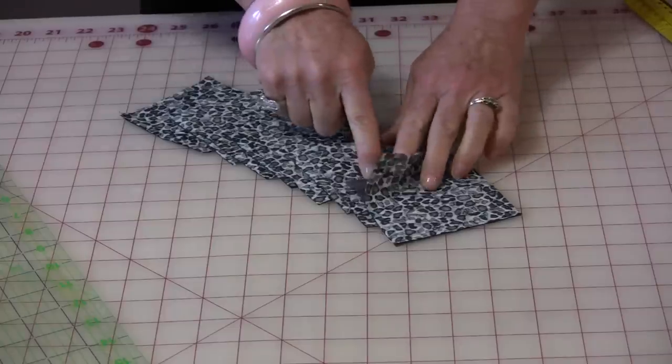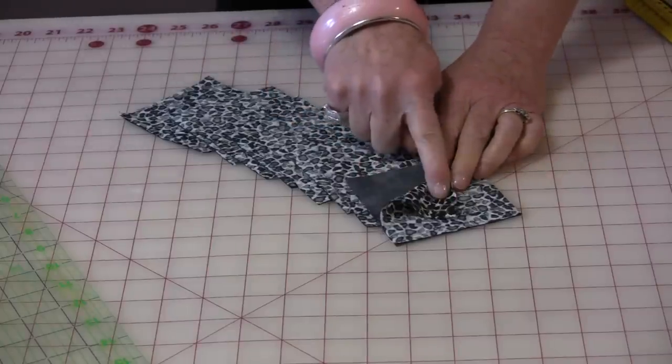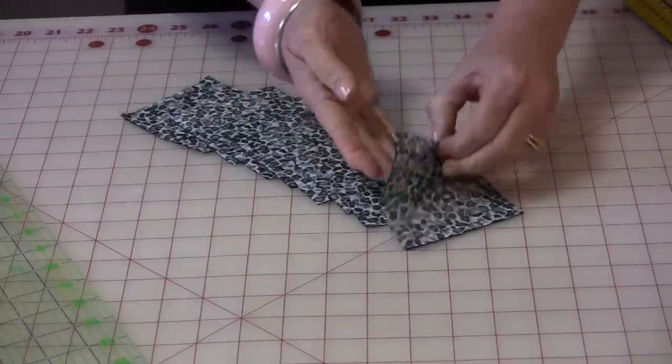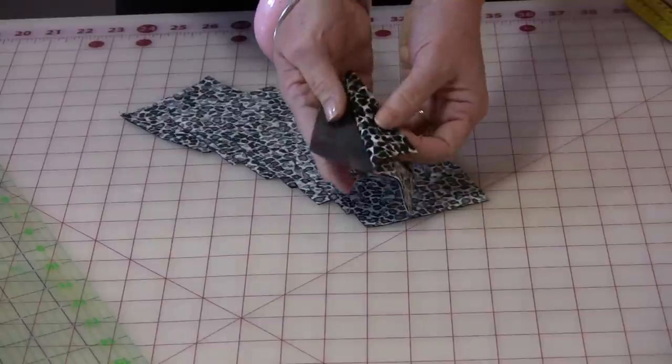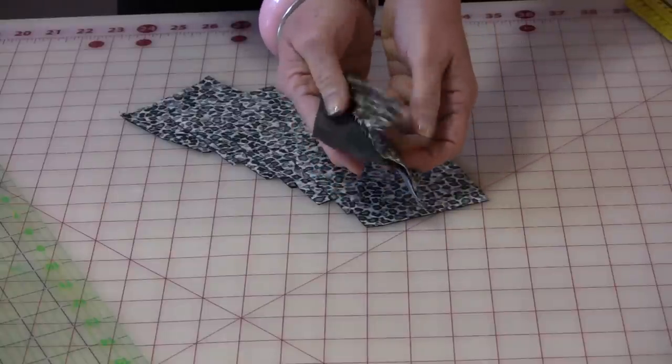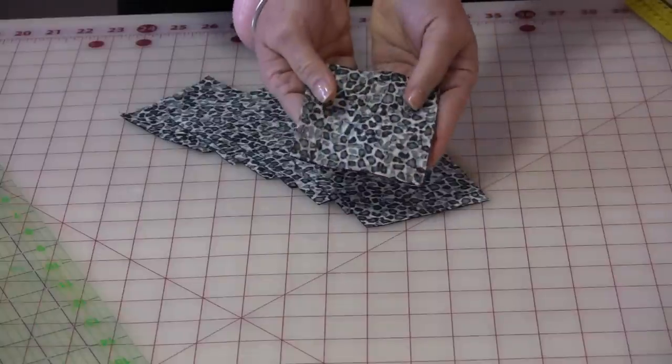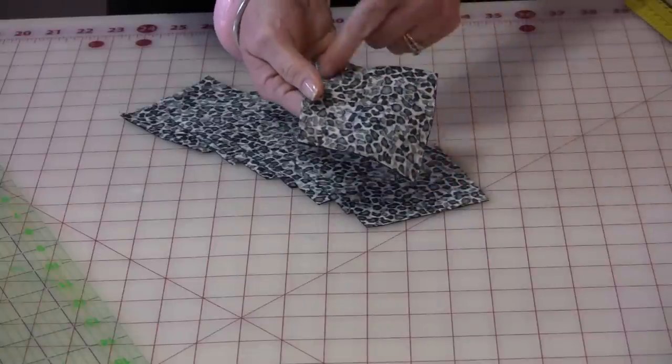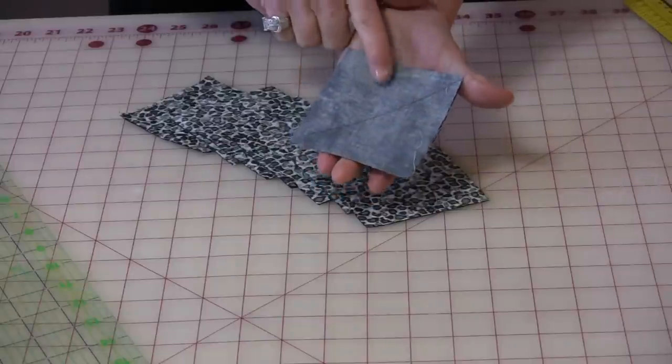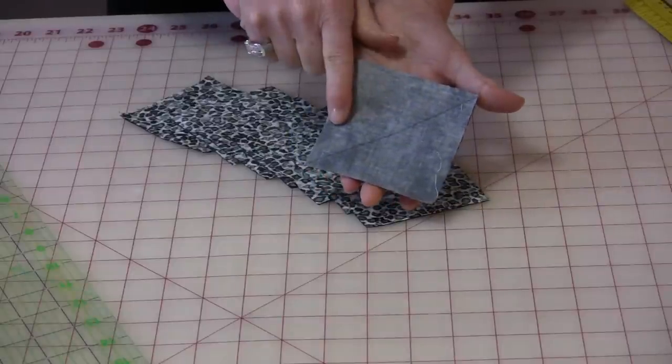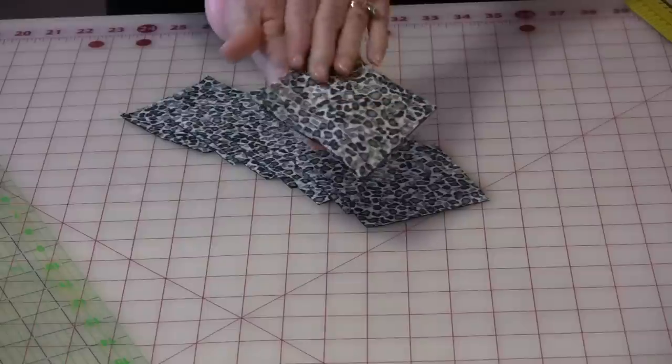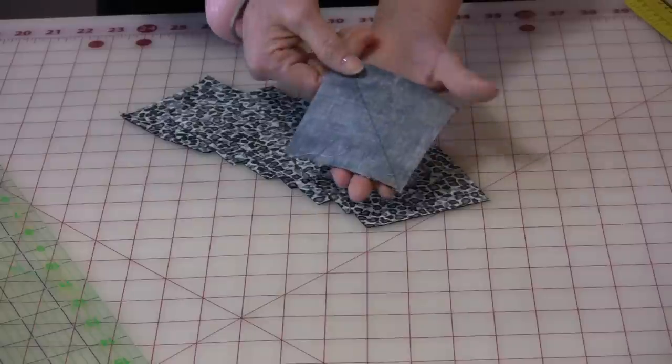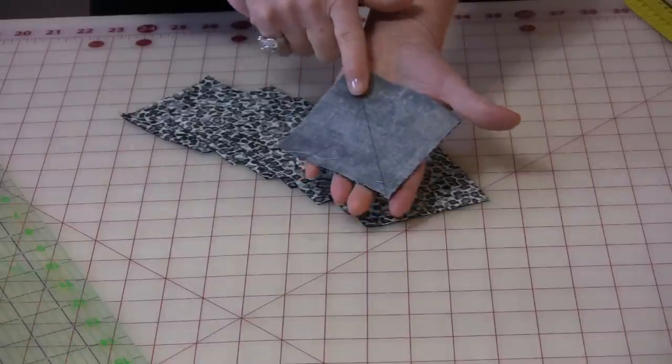But let's get started and make the pinwheel block. So I have cut eight of each of the two colors at a 3½ inch square, and I have put the wrong sides together so the wrong sides are touching. The next thing you need to do is draw a line from corner to corner. Now I've chosen this side because, as you can see, that line is definitely a lot easier to see than that line.